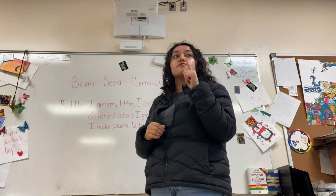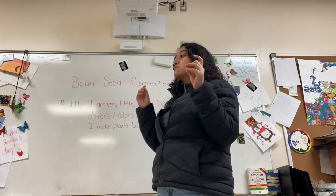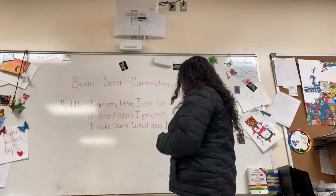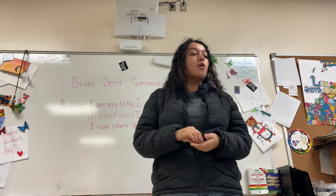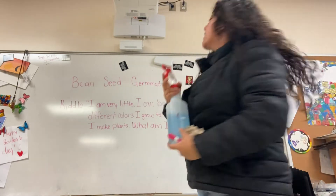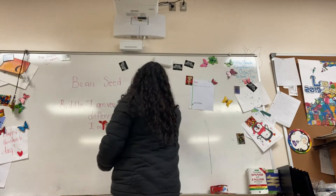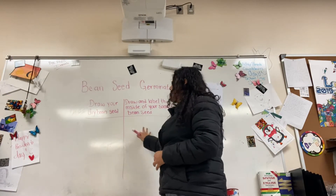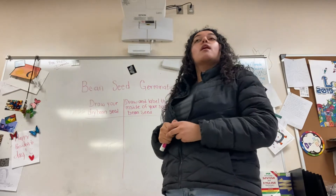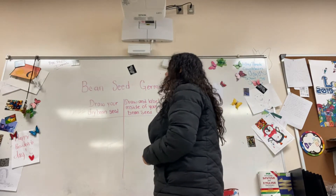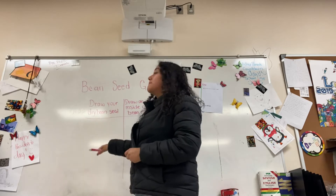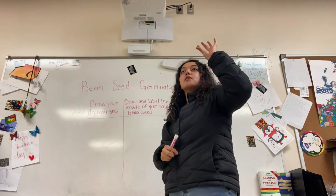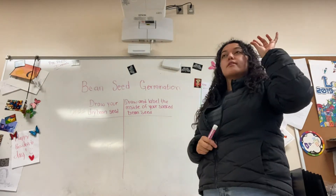I'll need one person from each table to go get the notebooks for everyone at your table. In the meantime, I'll be doing the chart we need for this. Please draw the T-chart that I have up here. This is going to be our Activity Sheet One. On one side, we're going to draw your dry bean seed. Now that you have your bean seed — I've passed them out — please draw how it looks.